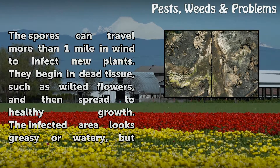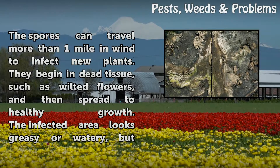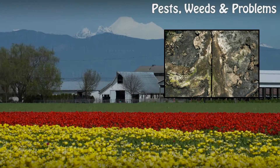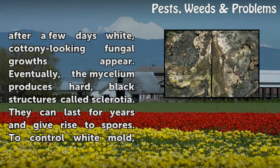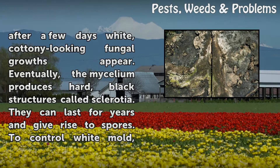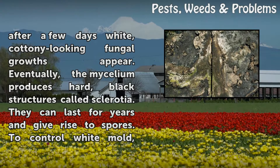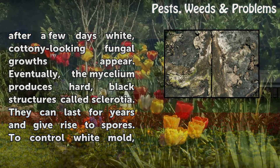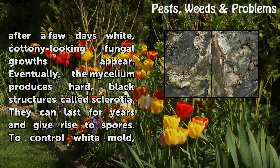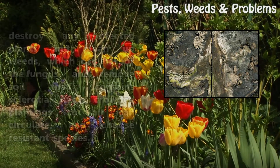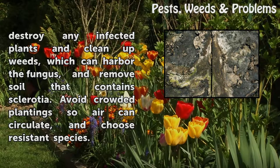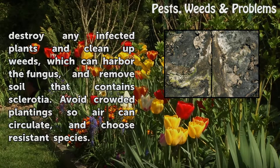They begin in dead tissue, such as wilted flowers, and then spread to healthy growth. The infected area looks greasy or watery, but after a few days white, cottony-looking fungal growths appear. Eventually the mycelium produces hard, black structures called sclerotia, which can last for years and give rise to spores. To control white mold, destroy any infected plants and clean up weeds, which can harbor the fungus, and remove soil that contains sclerotia.